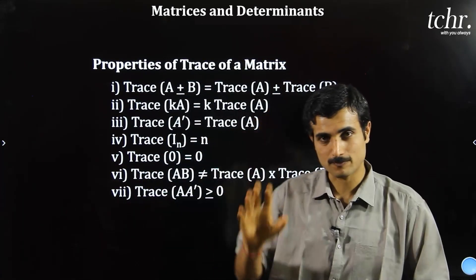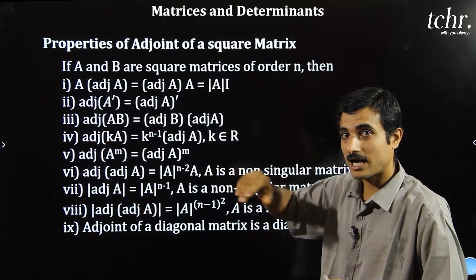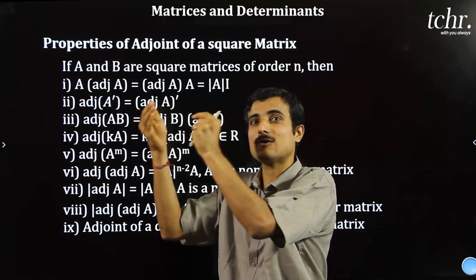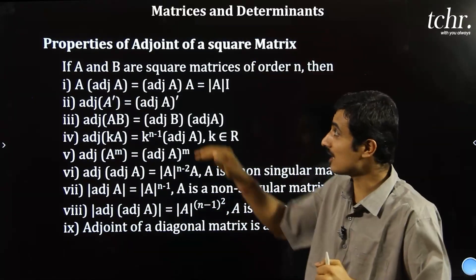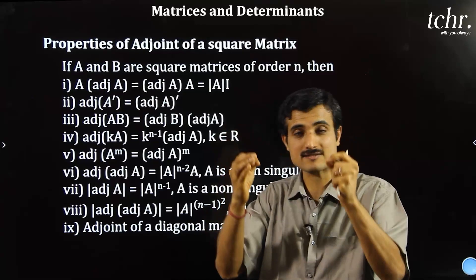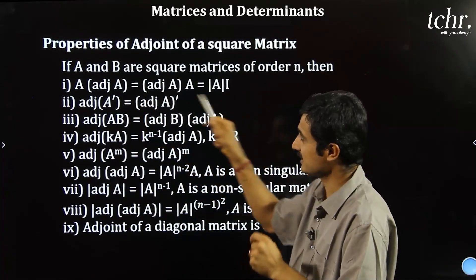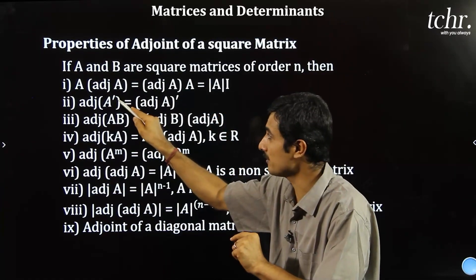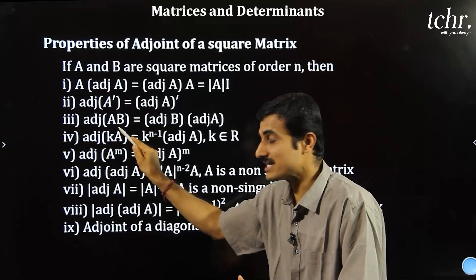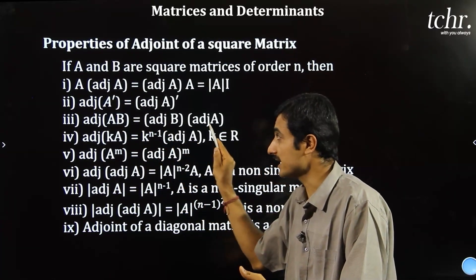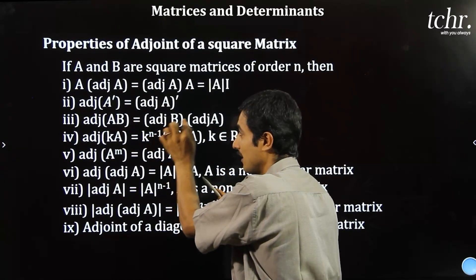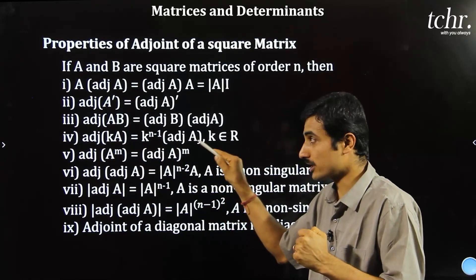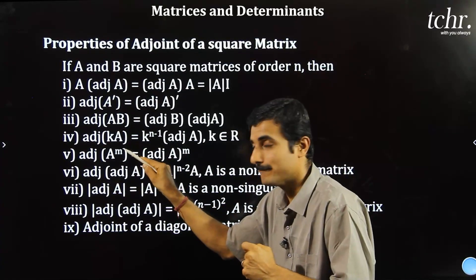Properties of adjoint of a square matrix — adjoint A means find all minors and cofactors, group them into a matrix form — that is adjoint A. Key property: A into adjoint A, and adjoint A into A, both equal determinant of A times I. Also, adjoint of A transpose equals adjoint of A whole transpose. And adjoint of AB equals adjoint of B into adjoint of A — second matrix comes first.